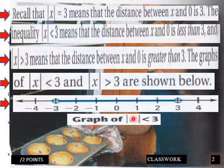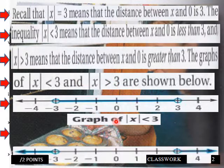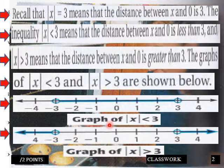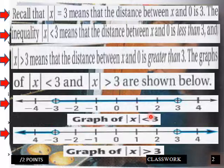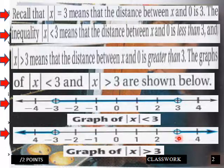Here they are. The graph of these two absolute value inequalities: the graph of |x| less than 3 is shown here — a joined segment between negative 3 and 3. And the graph of |x| greater than 3 is shown here — rays going in two separate directions.